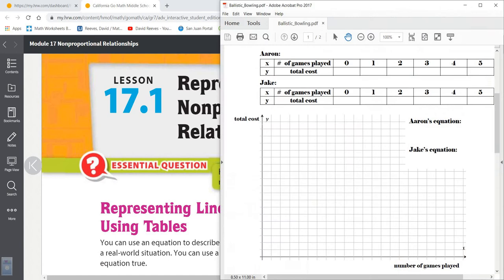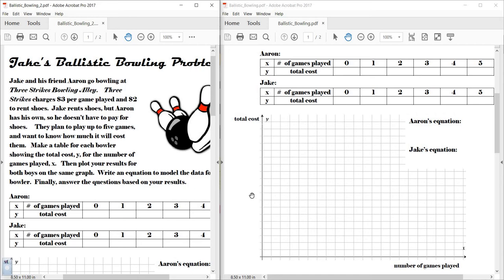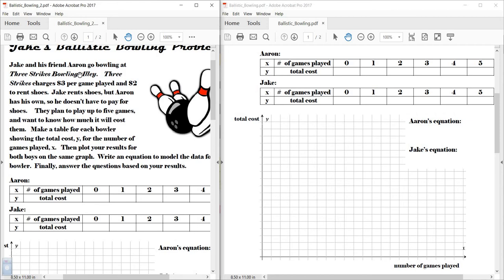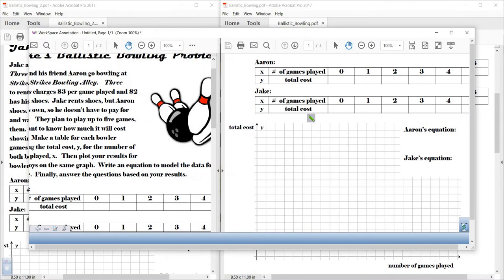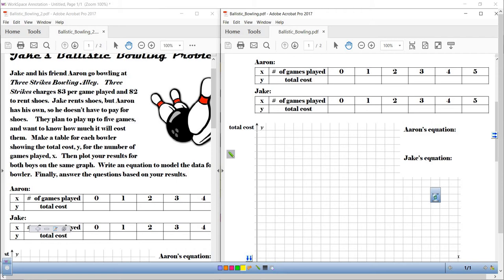I'm going to introduce this idea of linear non-proportional relationships using one of my favorite problems which is Jake's ballistic bowling problem. So here we go. I'm going to go ahead and read the problem right now. It says Jake and his friend Aaron go bowling at Three Strikes Bowling Alley. Three Strikes charges $3 per game played and $2 to rent shoes. Jake rents shoes but Aaron has his own so he doesn't have to pay for his shoes.